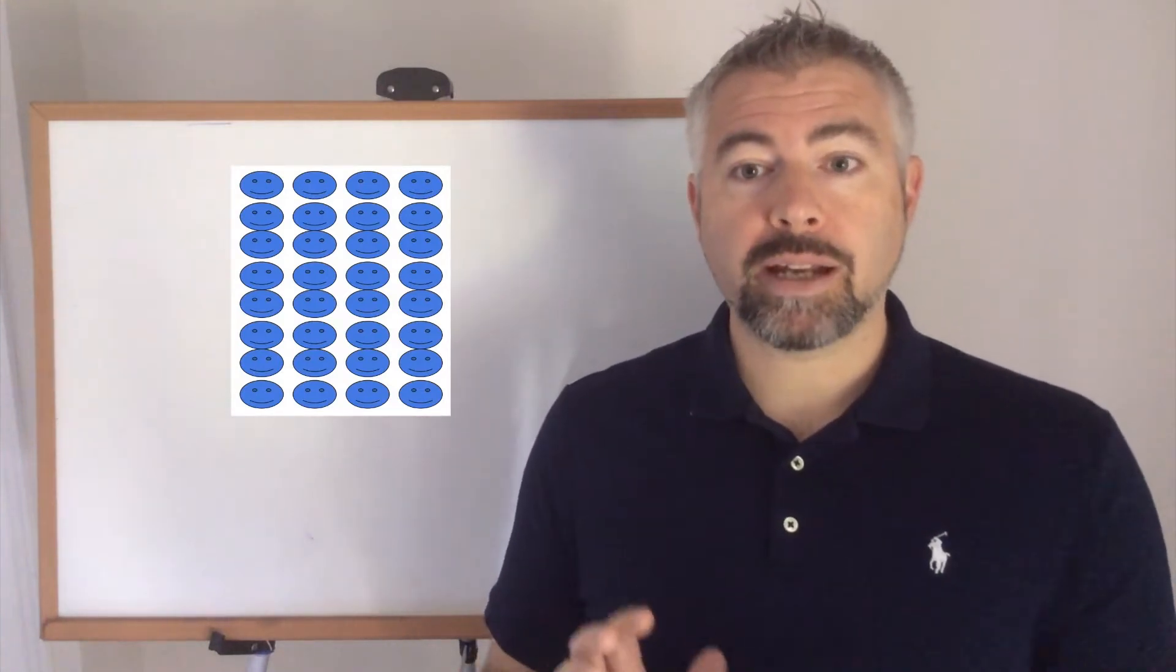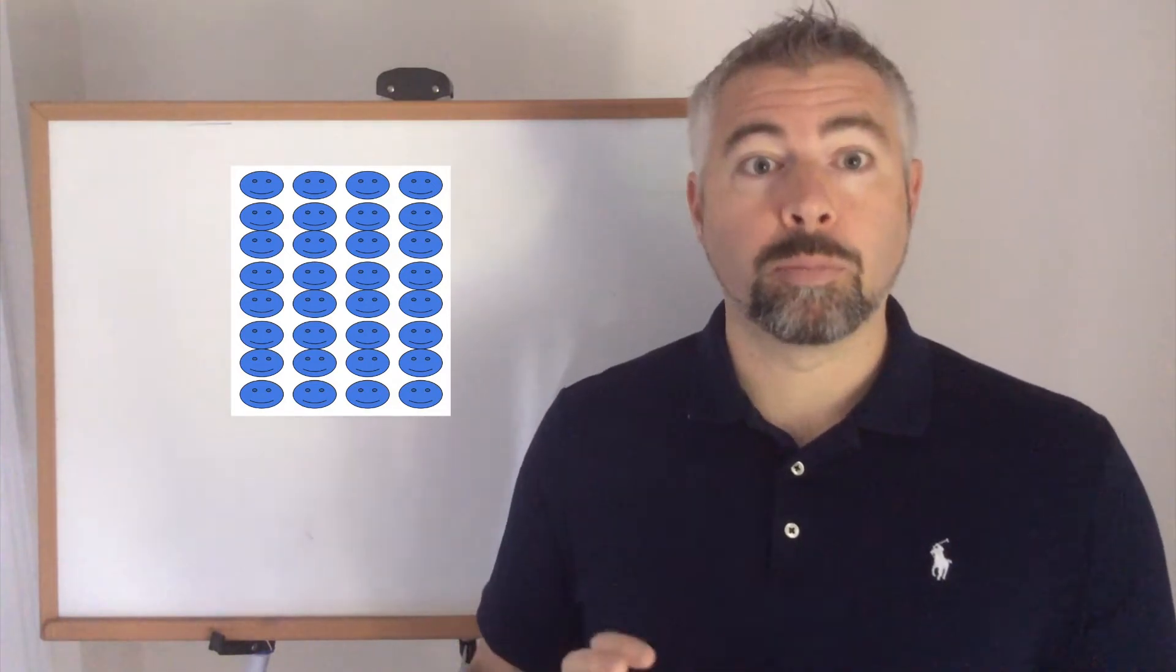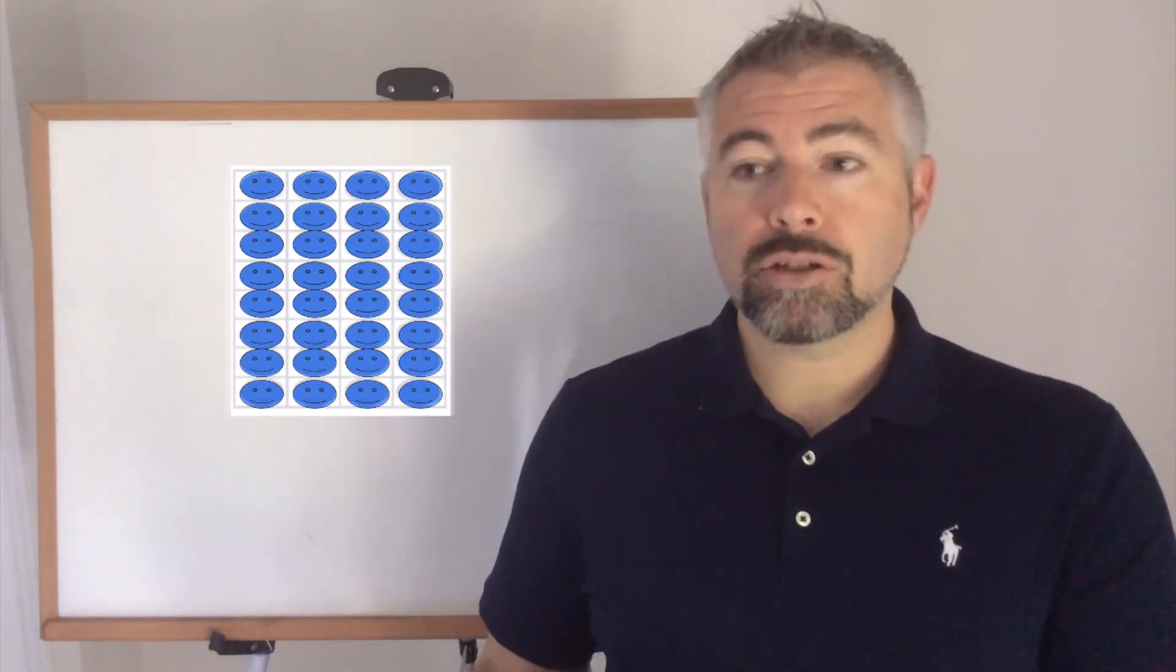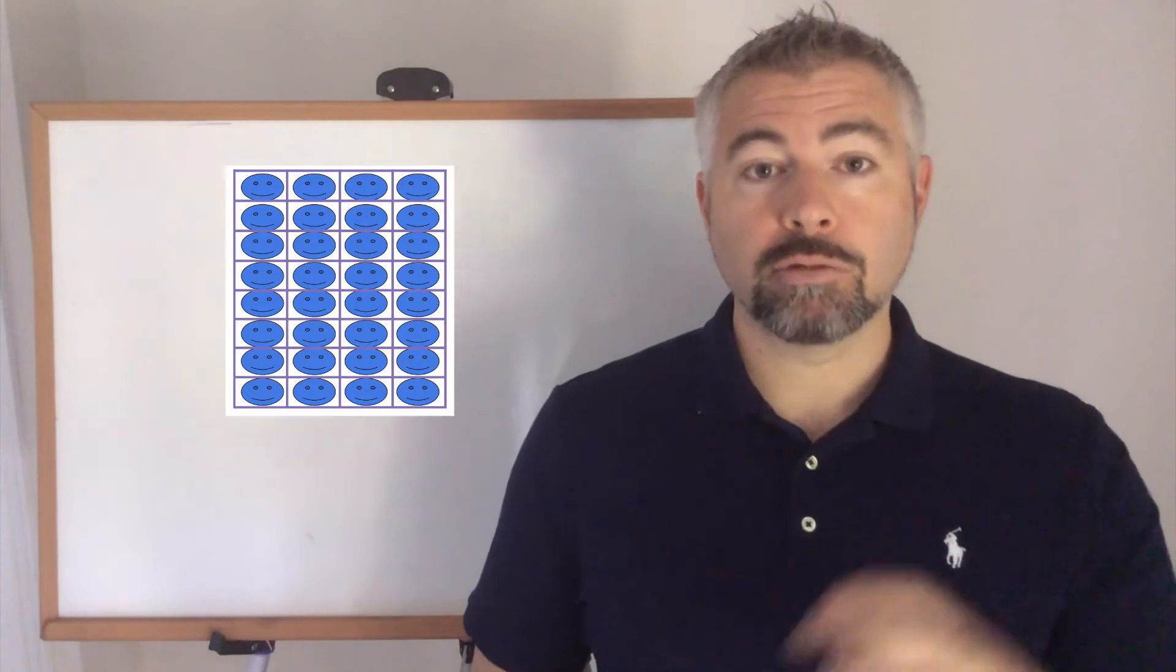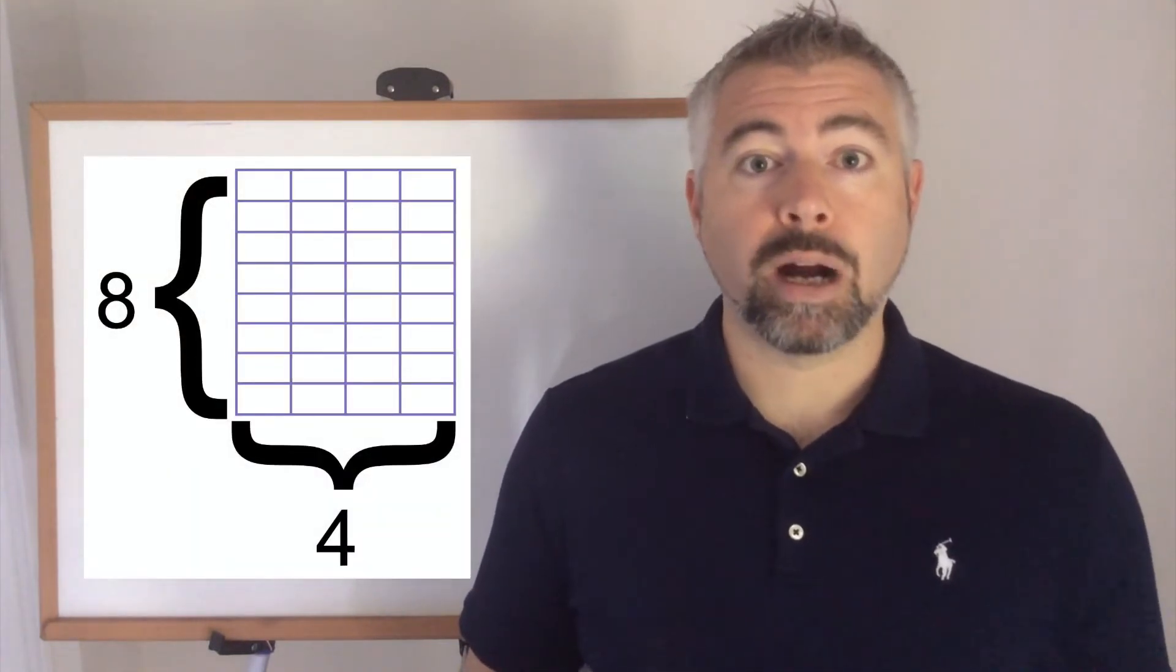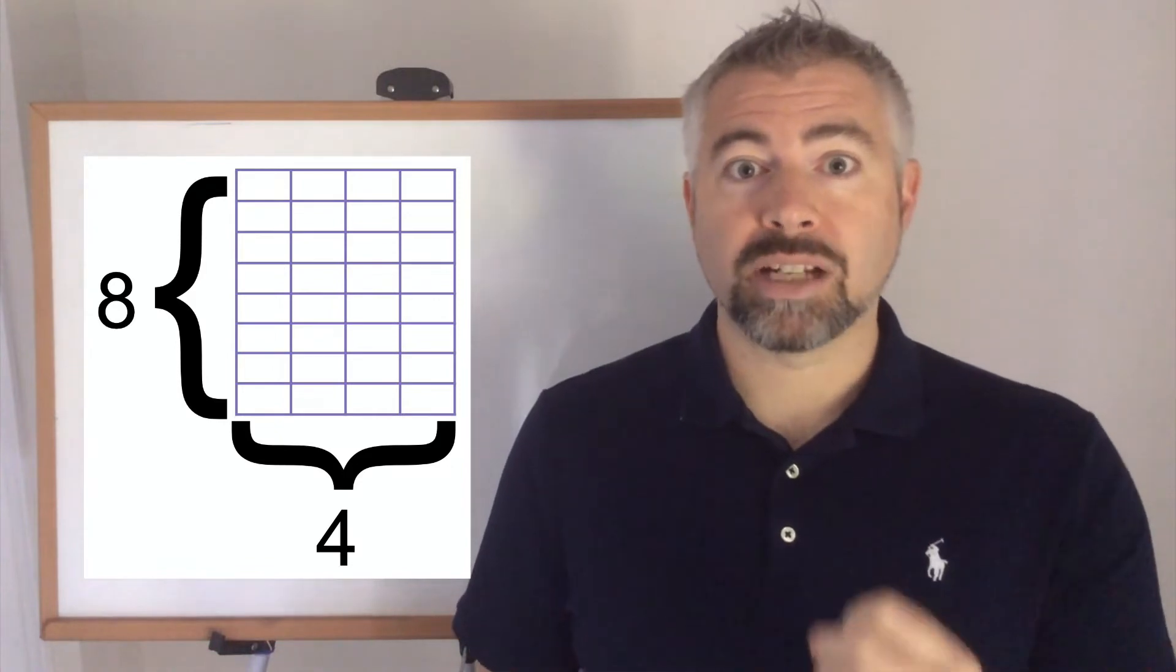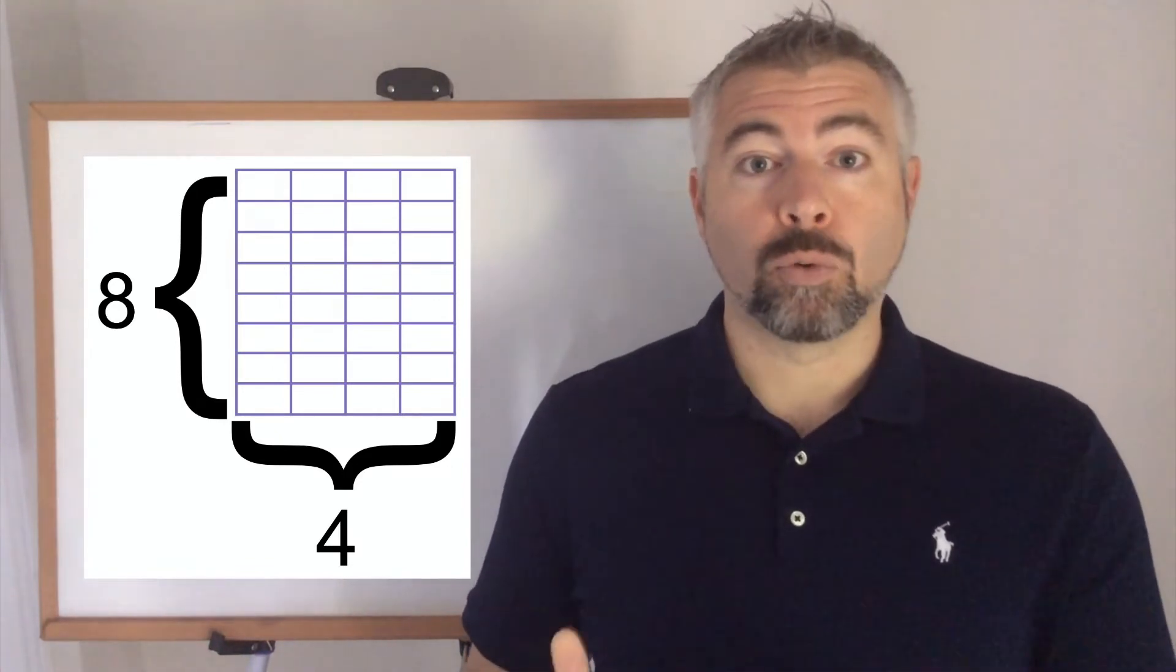we start to build that idea of dimensionality, of something being three by four or four by eight. You could imagine drawing a grid around all the objects to create a shape. And then if you actually remove the objects, you have that space and you could make the connection why an array of four objects by eight objects is the same as measuring a shape that's four by eight.